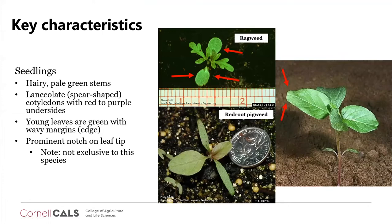The seedlings are hairy with pale green stems. It has lanceolate — meaning spear-shaped — cotyledons that are red to purple on the undersides, and the true leaf margins are green and wavy. Comparing ragweed on top with red root pigweed on the bottom: ragweed has round cotyledons and dissected leaves, while red root pigweed has spear-shaped cotyledons and egg-shaped leaves. It also has a notch on the leaf tip, which is somewhat characteristic of this species.